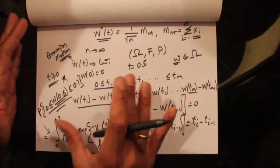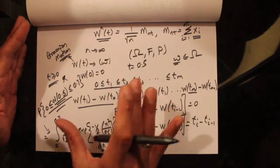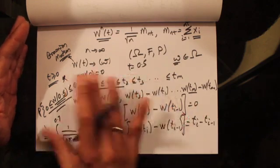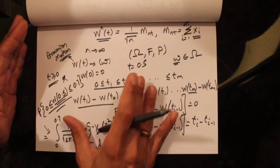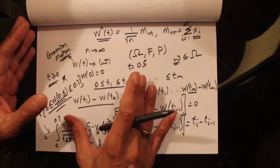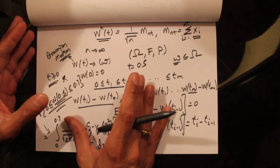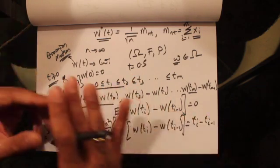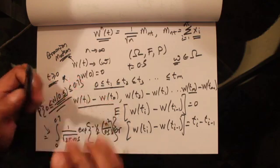That was a brief introduction to Brownian motion and its definition. Now let's move on to talking about the distribution of a Brownian motion.